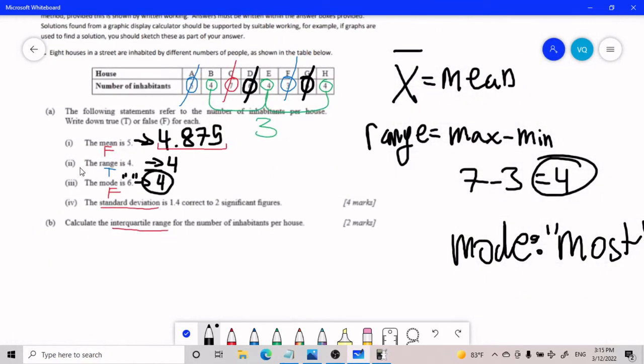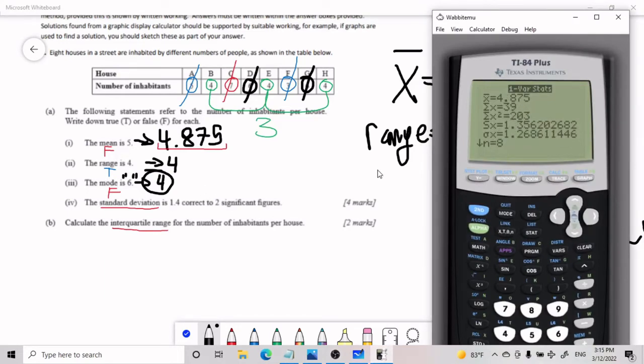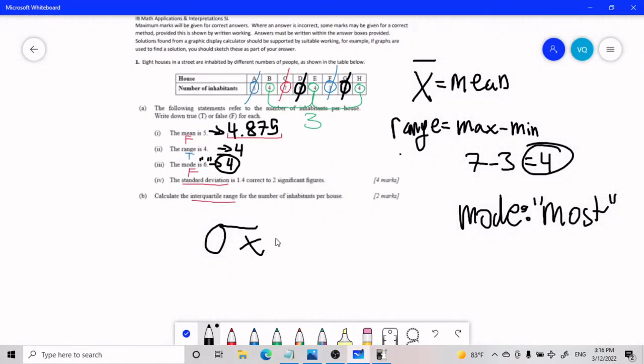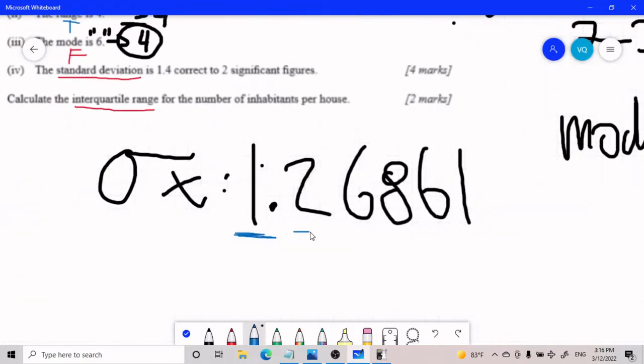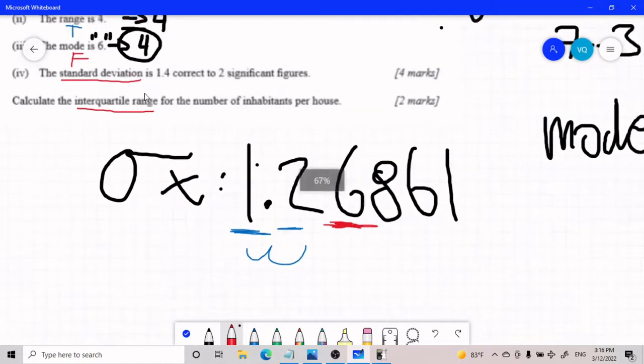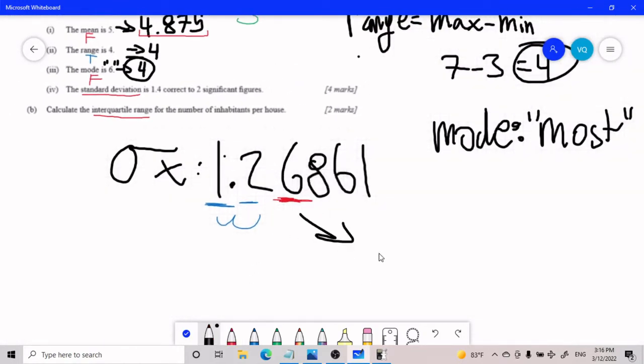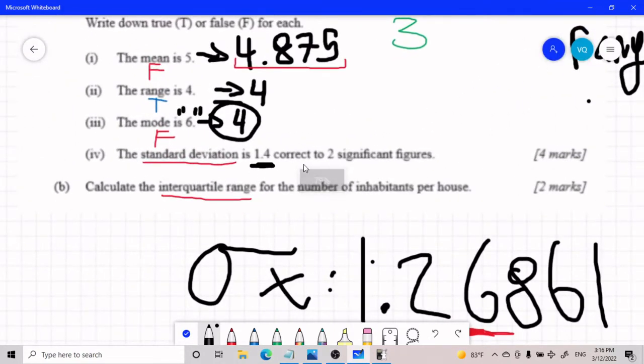Now we need the standard deviation being correct to 1.4 in respect to two significant figures. So standard deviation is somewhere here. Again, one of those things you just kind of have to memorize. Much how mean is this symbol here, standard deviation is this symbol here. So I look at my calculator. I have 1.2686686 and a couple more. So significant figures. I might make a video on this some other time. But essentially, if I have two significant figures, I have to count two. So here's one, here's another, and I compare it to the third. That's always an important step. These are my two significant figures. I compare it to the third. And because my third is greater than 5, it's a 6, it's greater than 5, that means I need to round up. So this to two significant figures would be 1.3. And so the standard deviation is 1.4, correct to two significant figures would be false. It is not 1.4. It is actually 1.3.